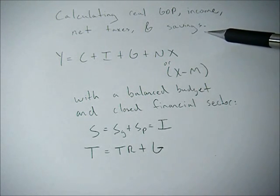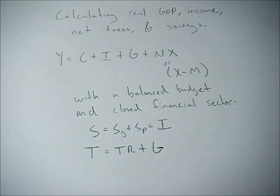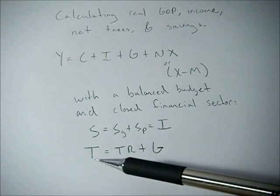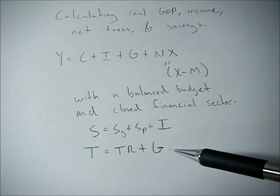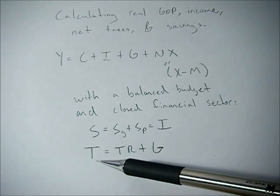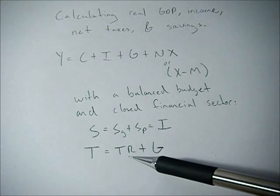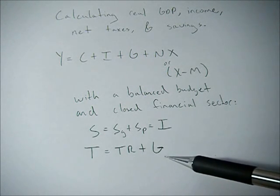So if you're trying to find savings, if you know what investment is, that's equal to savings. Now, with a balanced budget, meaning the government isn't saving or running a surplus or deficit, then taxes are equal to government transfers, which means the money they give back to the people, plus government spending.